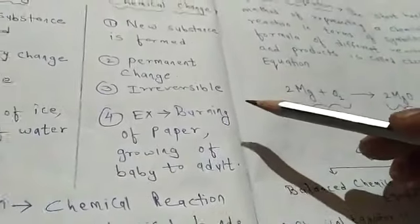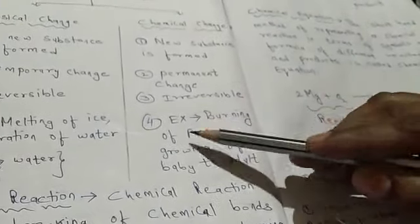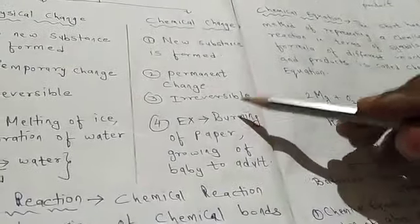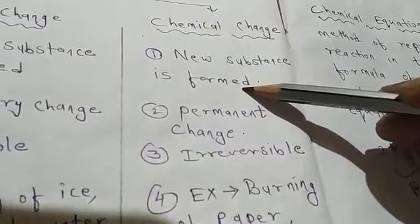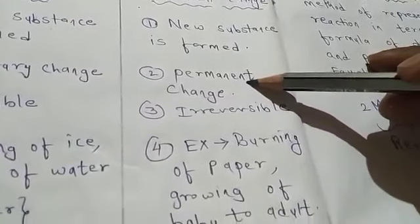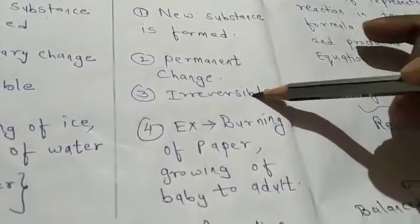Here, a new substance is formed. From that ash, you cannot get back paper. So, burning of paper is a chemical change in which new substance is formed. It is permanent change. And it is irreversible.